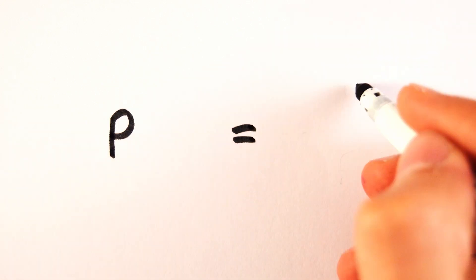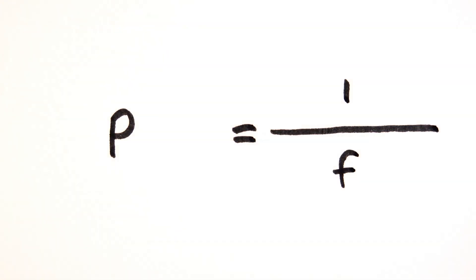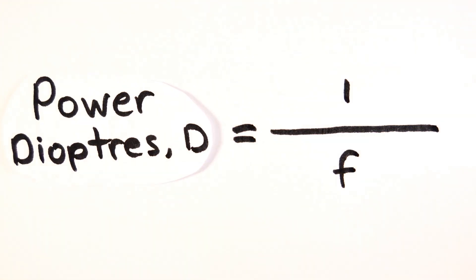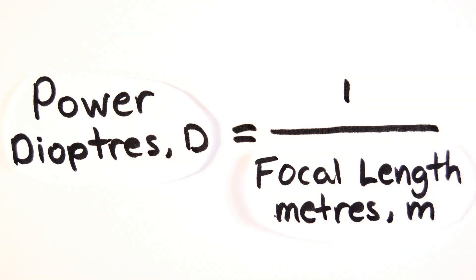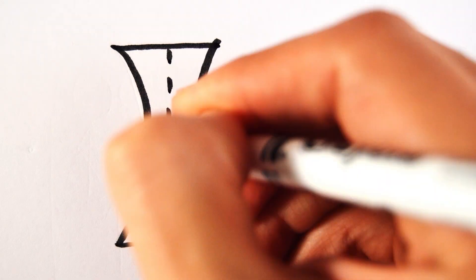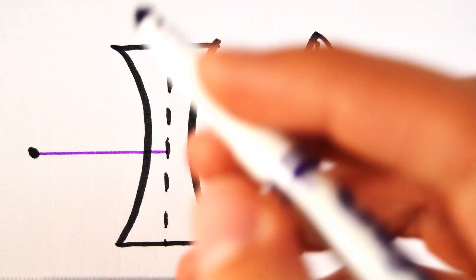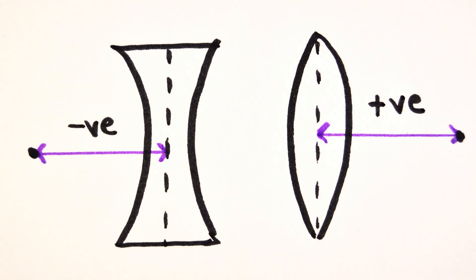The power of a lens can be calculated by using the simple equation p equals 1 over f, where p is the power in diopters and f is the focal length in meters. The power of a diverging lens is always negative since the focal point is in front of the lens so it is measured as a negative value.